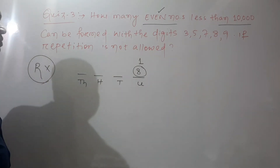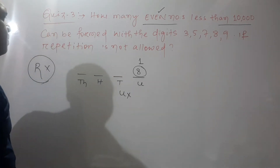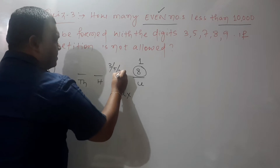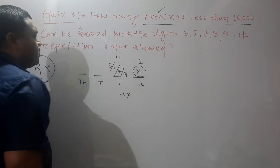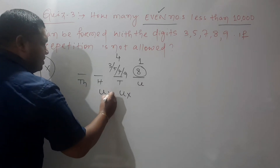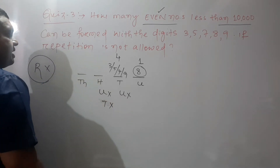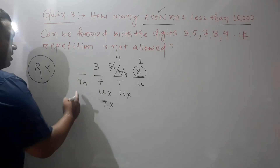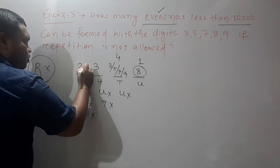Since repetition is not allowed, the digit at the unit place cannot be reused. To fill the tens place, the available digits are 3, 5, 7, and 9 — so four possible ways. To fill the hundreds place, you cannot use the unit or tens place digits, leaving three possible ways. For the thousands place, there are two possible ways.